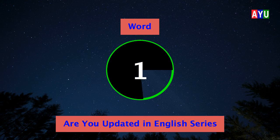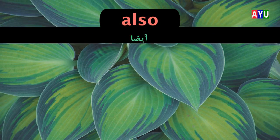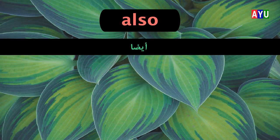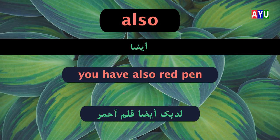First word: Also. Also means Aydan. Let's see one example. You have also read pen. Ladayka aydan kalamun ahmar.